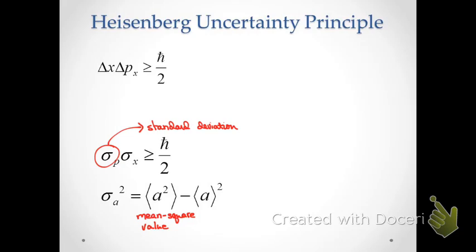We talked about this in statistics. Here's a very specific definition: the standard deviation squared, also known as the variance, is equal to the difference between the mean square value of a measurement and the mean value squared. That difference is equal to the variance for the particular position, momentum, or whatever it is we're measuring in the lab.